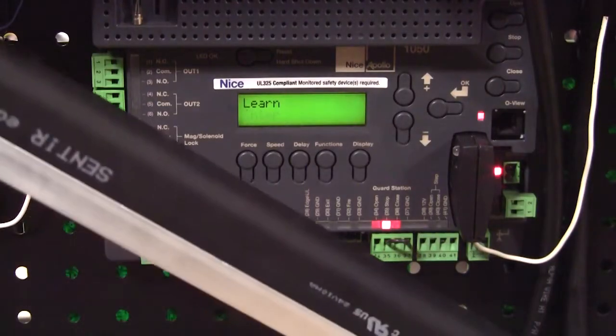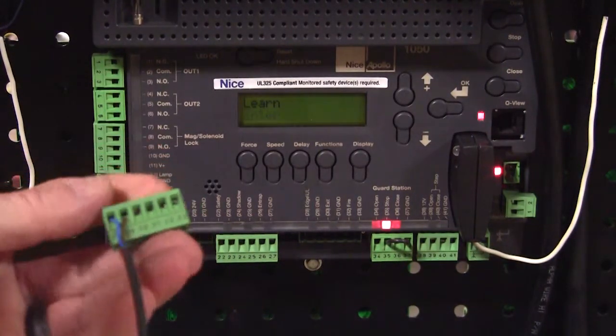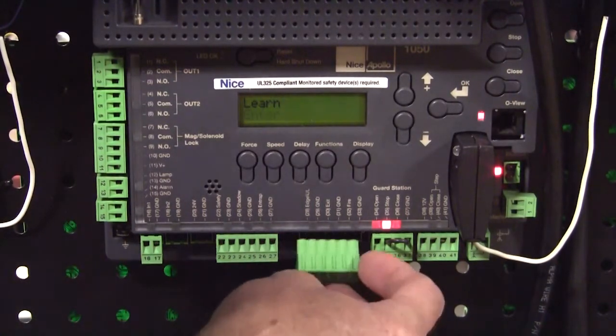So we've got our ASO 10k resistive edge. We've got the two wires of the ASO edge connected to terminals 28 and 29 on the 1050 board and we're simply going to plug it into the board.